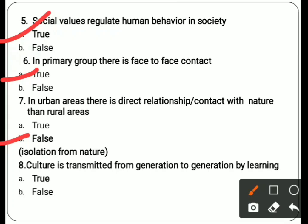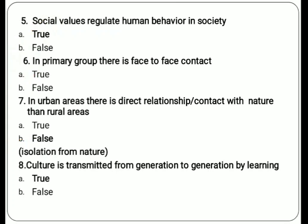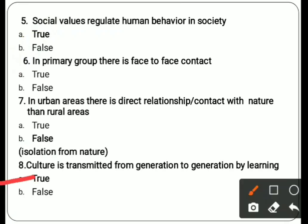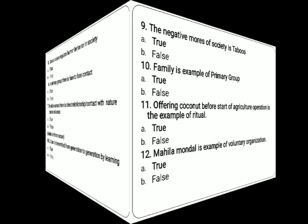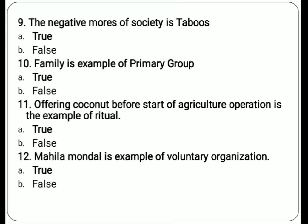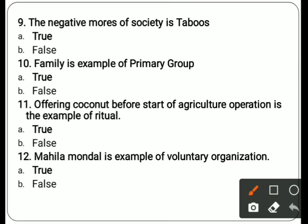Eighth: culture is transmitted from generation to generation by learning — answer is true. Culture is not limited to one generation; it transfers across generations. Ninth: negative mores of society are taboos — answer is true. Taboos are things we verbally don't do in public, for example, don't smoke.